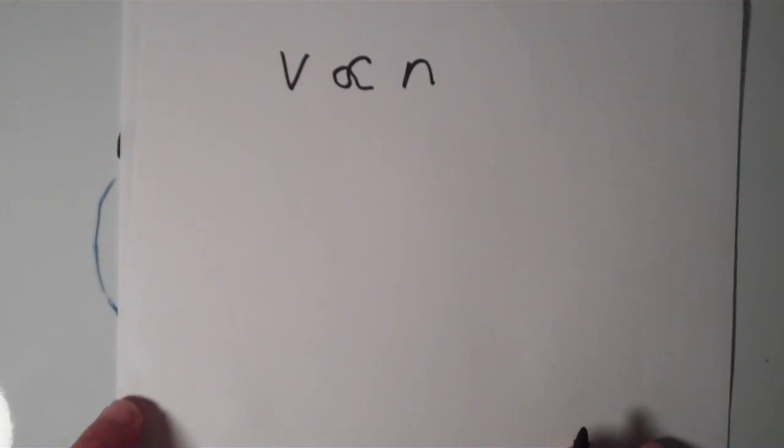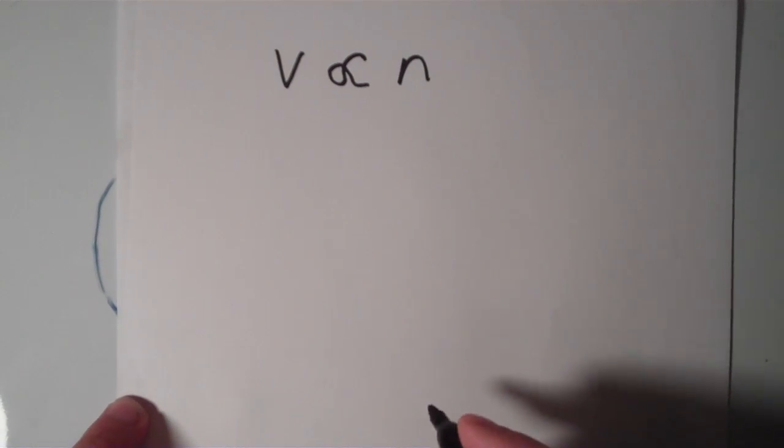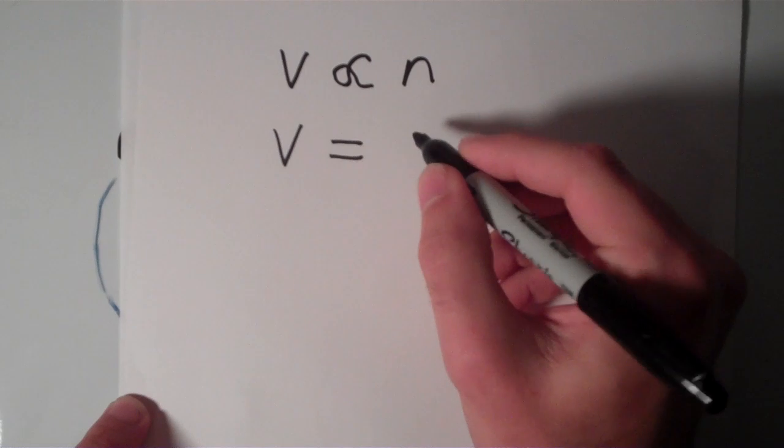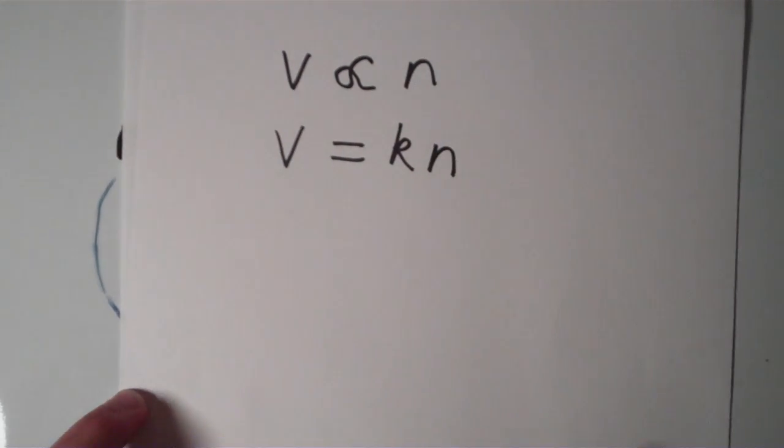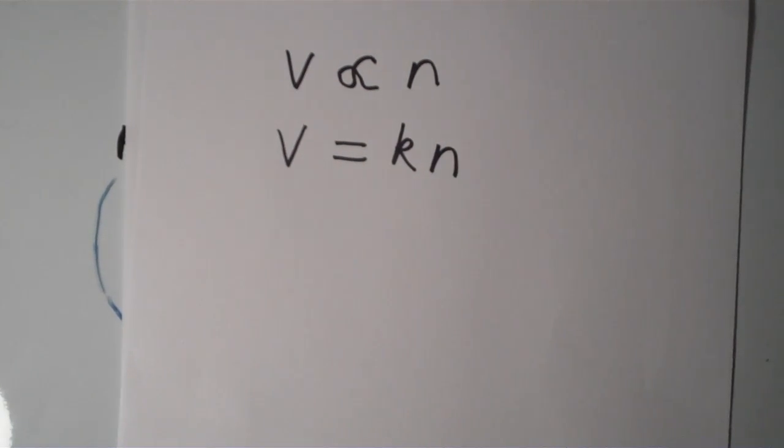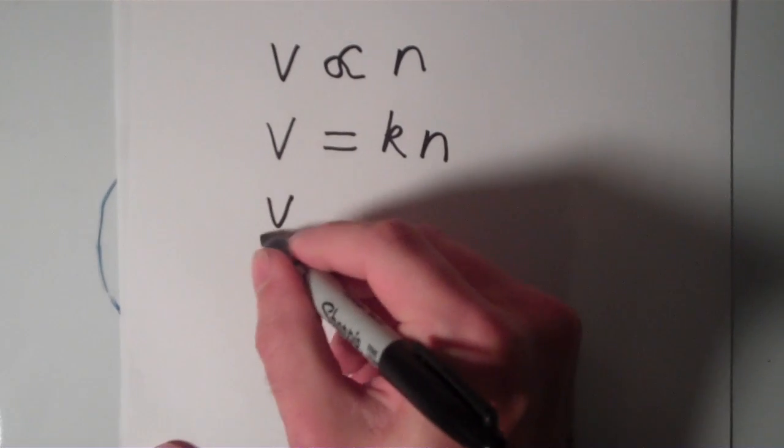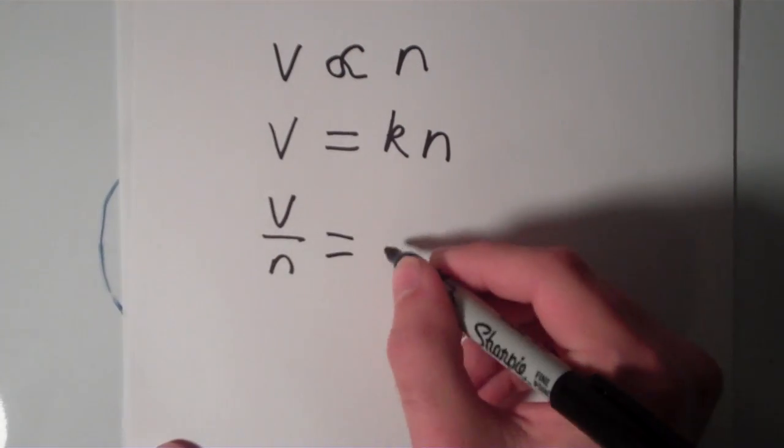So I'm going to turn this proportionality into an equation, and say that V is equal to a constant of proportionality, K, times N, the amount. Divide both sides of the equation by N, and you get that V over N is equal to the constant K.